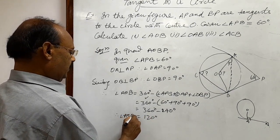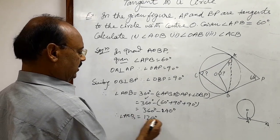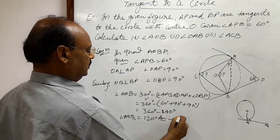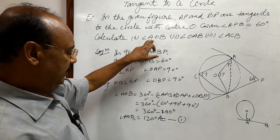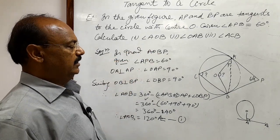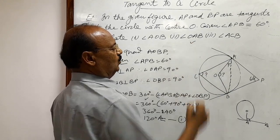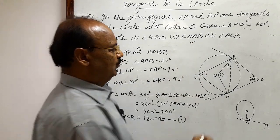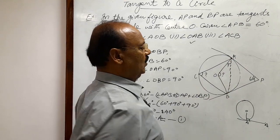Therefore, angle AOB is equal to 120 degrees. This is the answer to the first part. Now let us try to find angle OAB.